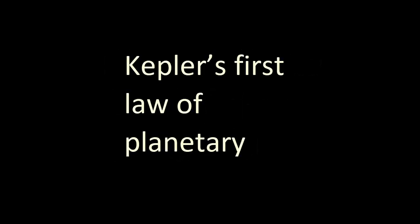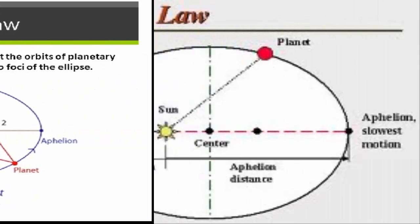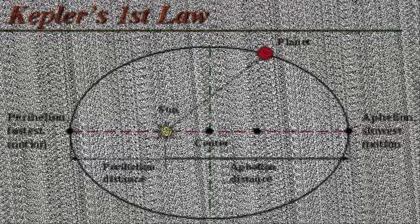Kepler's first law of planetary motion can be stated as follows: all planets move about the sun in elliptical orbits, having the sun as one of the foci. The second name of Kepler's first law is the law of orbit. The diagram of Kepler's first law and its full derivation are provided in the next slide.